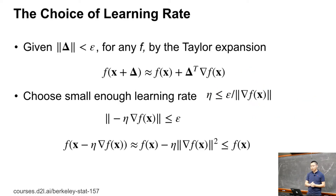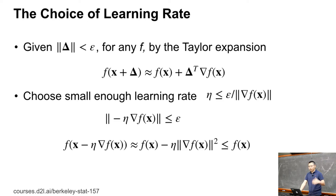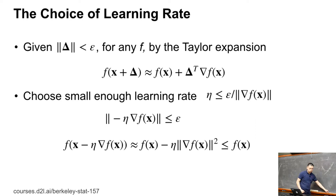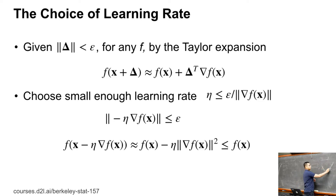Now let's discuss how to choose the learning rate. This applies to both non-convex and convex problems. The idea is that given a small enough epsilon, and given a delta smaller than this number, then by the Taylor expansion, given any f(x), if we do a first-order approximation in the nearby area, it should be a very good approximation locally. So we can approximate f(x) by the first-order linear function.